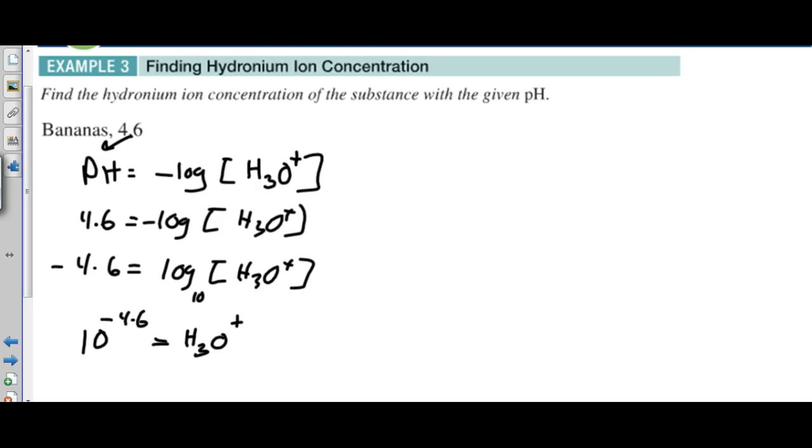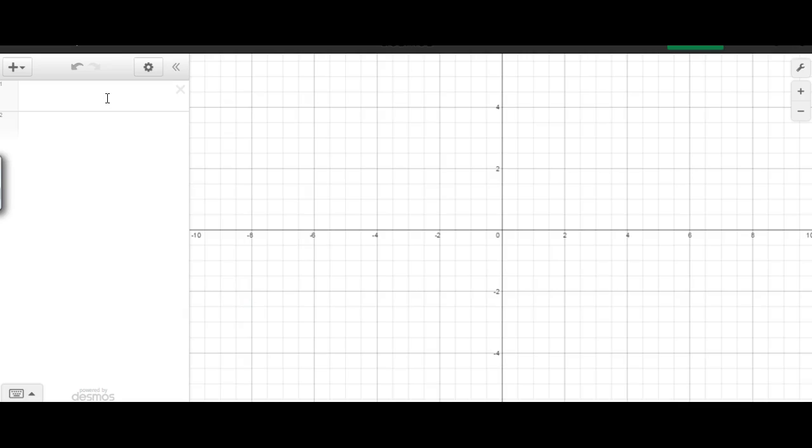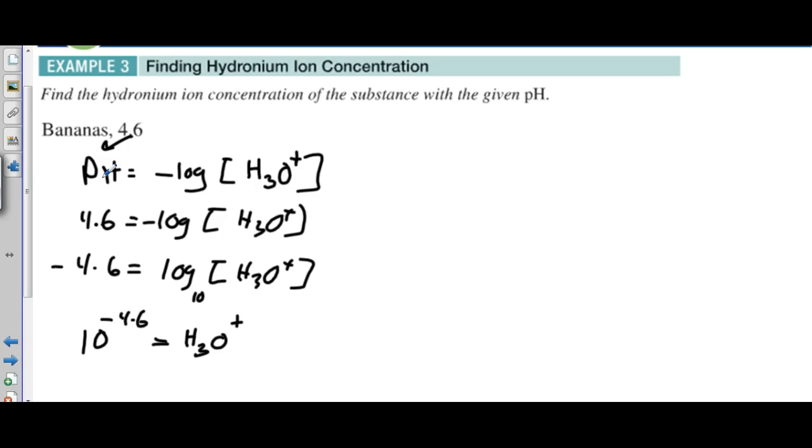We can go ahead and use a calculator then. 10 to the power of negative 4.6 is going to give us a pretty hairy decimal, but we're going to just leave it like that. There it is.